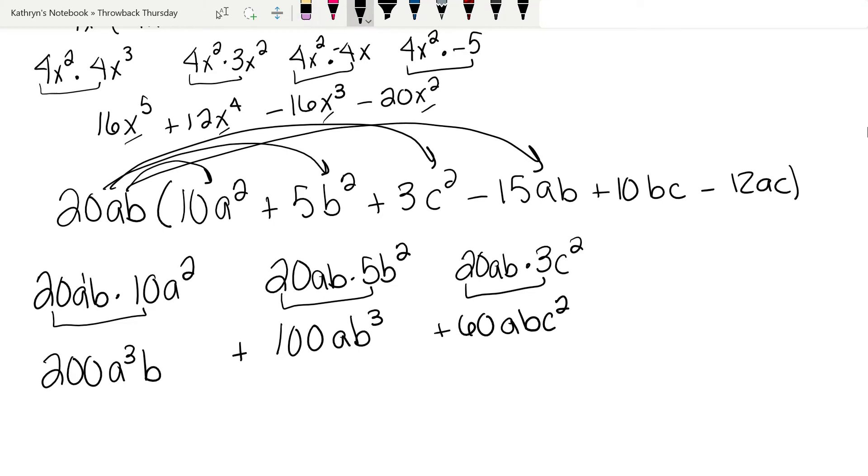We're going to have 20ab times negative 15ab, which is negative 300. I have two a's, so that is a². Two b's is b². There we go.